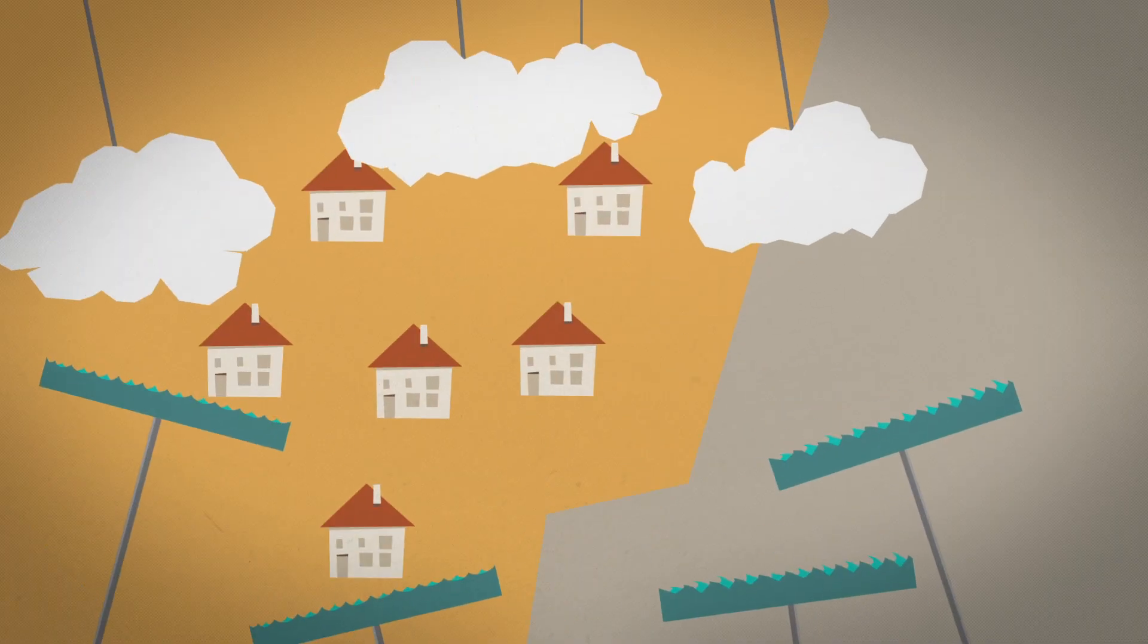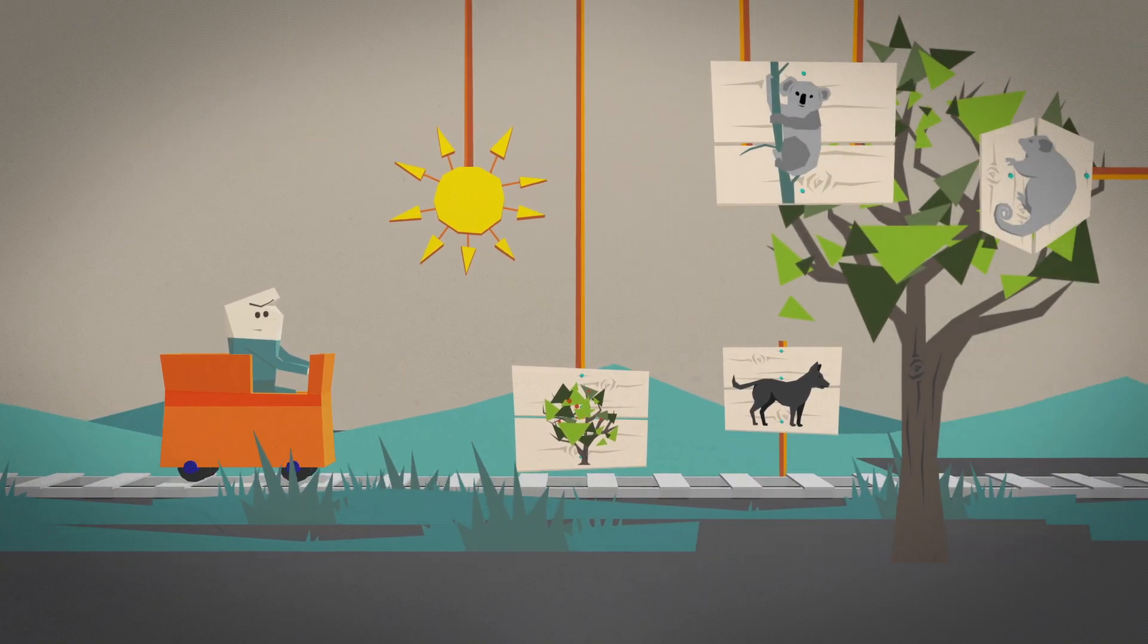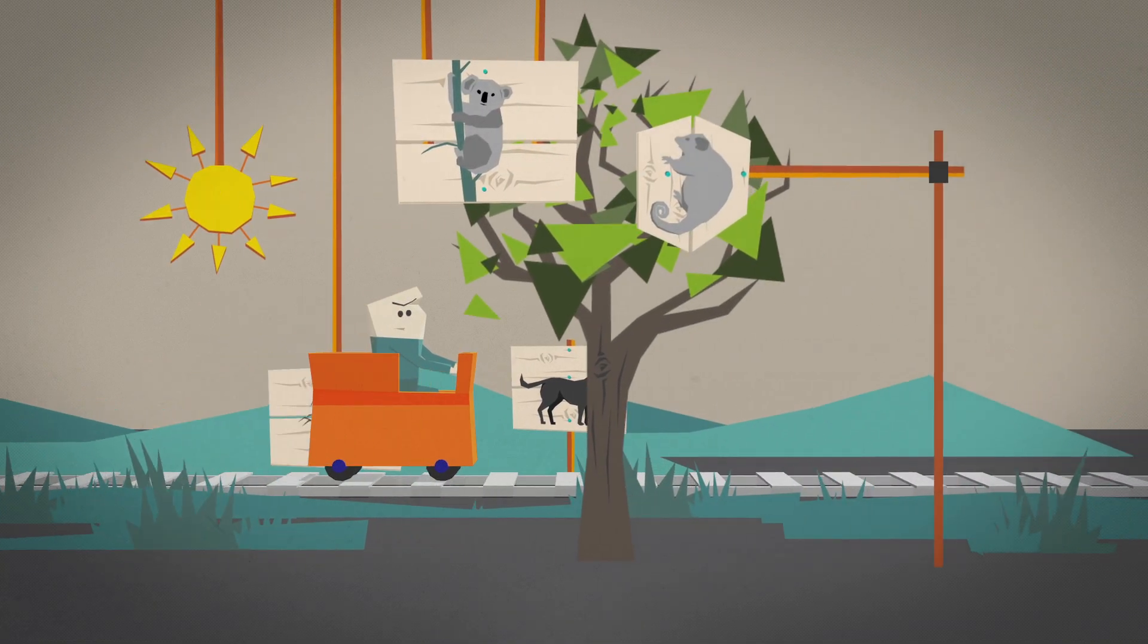Some areas will sometimes see too much water. Other areas won't get enough. Temperature increases will affect plants and animals, driving some towards extinction.